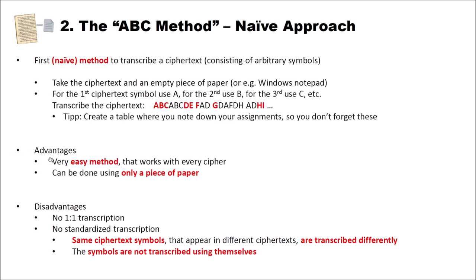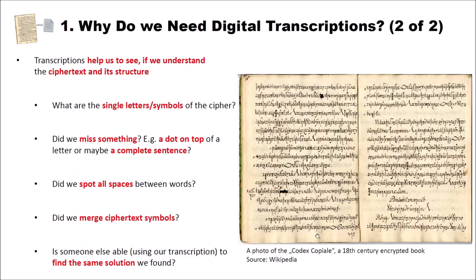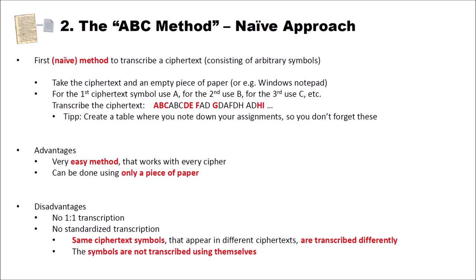The advantages of this method: it is a very easy method that works with every cipher and can be done using only a piece of paper. The disadvantages are that we have no one-to-one transcription — we do not get the meaning of the symbols — and we have no standardized transcription. That means the same ciphertext symbols appearing in different ciphertexts are transcribed differently. If we transcribe two different ciphers using the ABC method, the A in one cipher means a different symbol than the A in another, making it impossible to compare different ciphertexts.